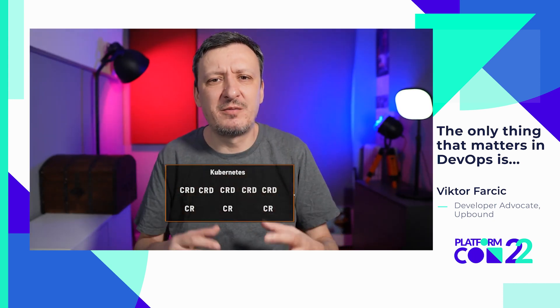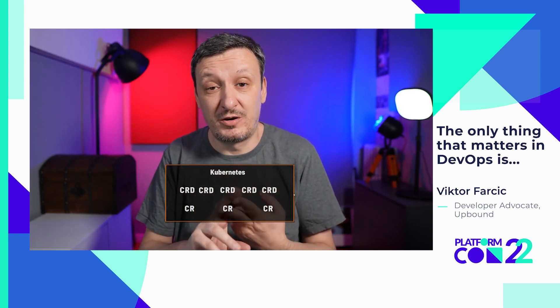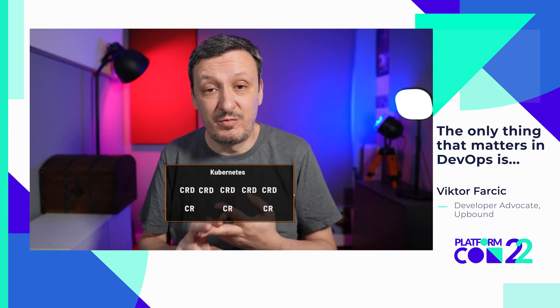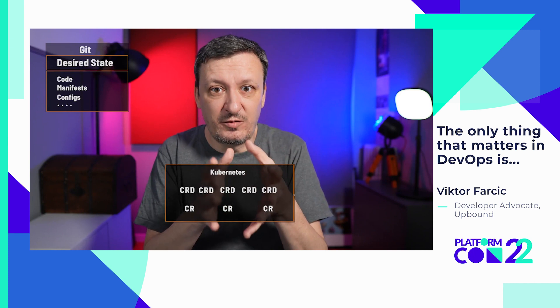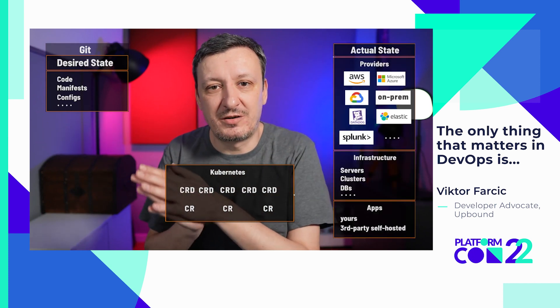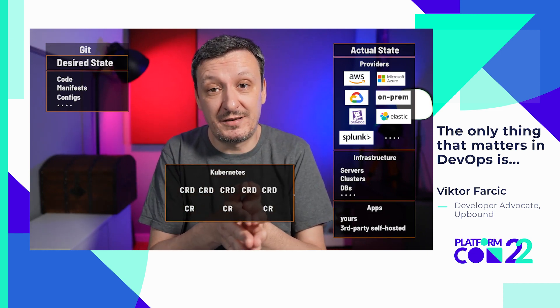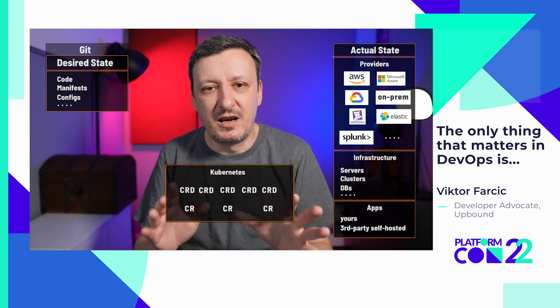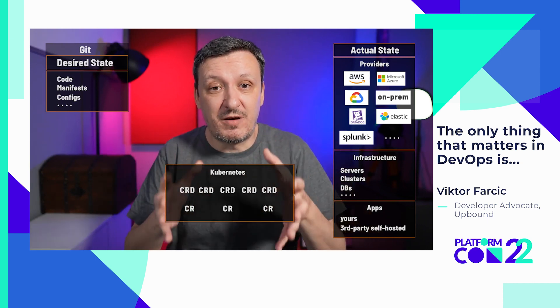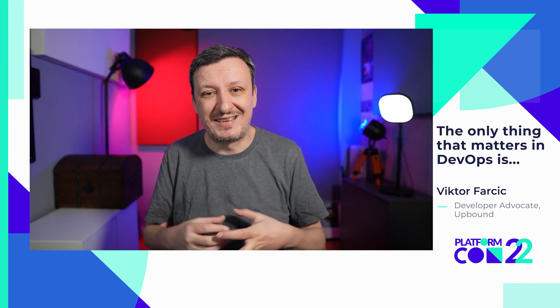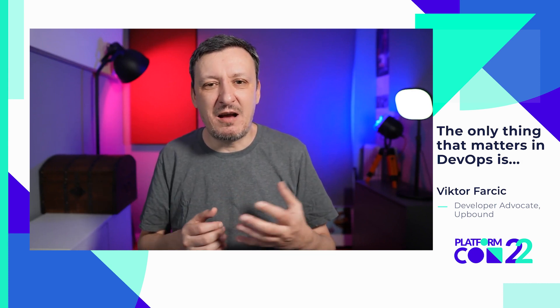That desired state somehow needs to automatically become the actual state. Today, if building from scratch, the engine ensuring that desired and actual state stay in sync is Kubernetes. Two reasons are extremely important: first, Kubernetes has a built-in mechanism to monitor state through its control loops and to converge the desired state — defined as custom resources — into the actual state. That actual state can be pods running in Kubernetes, AWS resources, or anything else. Kubernetes is not just an engine that runs containers; it is much more than that.